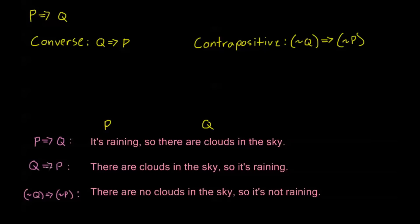Of course, with some conditional statements the converse might also be true — like, it's daytime and it's not nighttime. We can get a tautology so that these are always true. In the next video we'll talk about the special cases where these are both true; we call those biconditional statements.